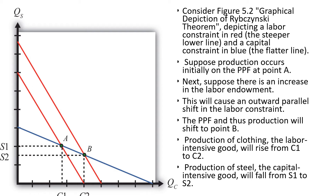This theorem can be better explained using the diagram shown here. In this figure, the graphical representation is depicted. The red line is the labor constraint, and comparing the two lines, the lower line is much steeper than the line above it. The blue line is relatively flatter.